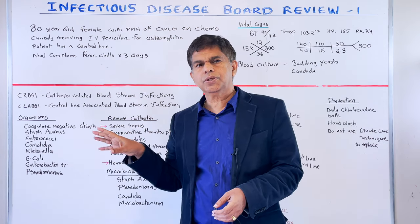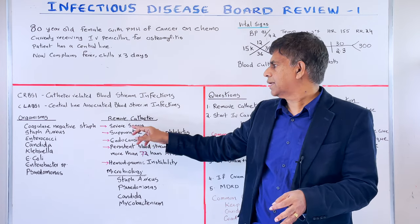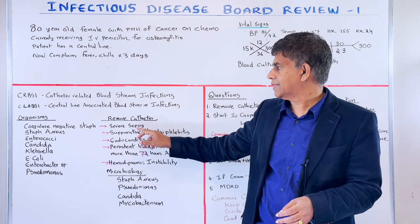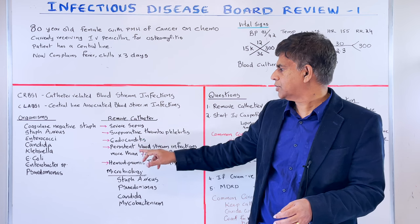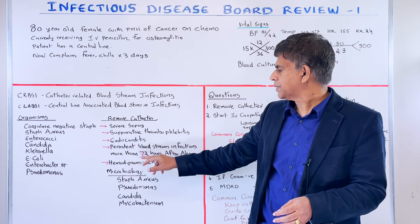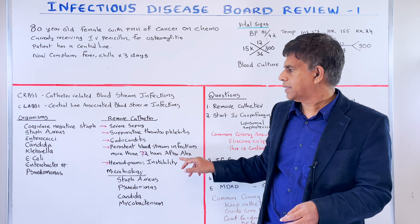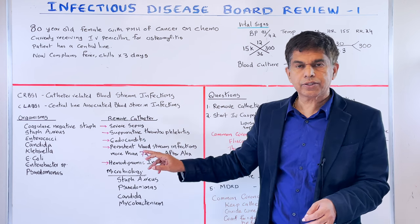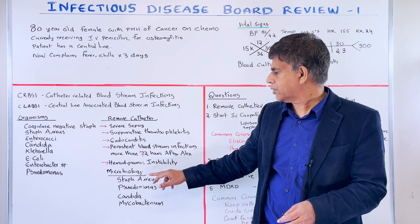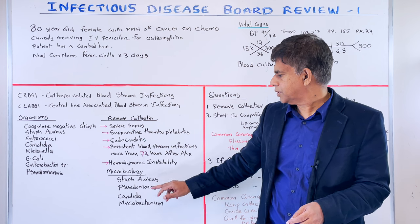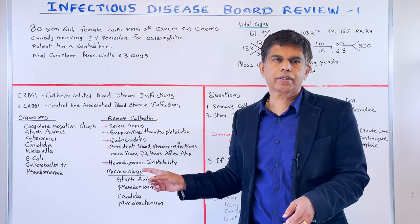Situations that require catheter removal include: severe sepsis, suppurative thrombophlebitis, endocarditis, persistent bloodstream infection more than 72 hours after antibiotic therapy, and hemodynamic instability. From a microbiology standpoint, organisms such as Staphylococcus aureus, Pseudomonas, Candida, and Mycobacterium all require catheter removal.